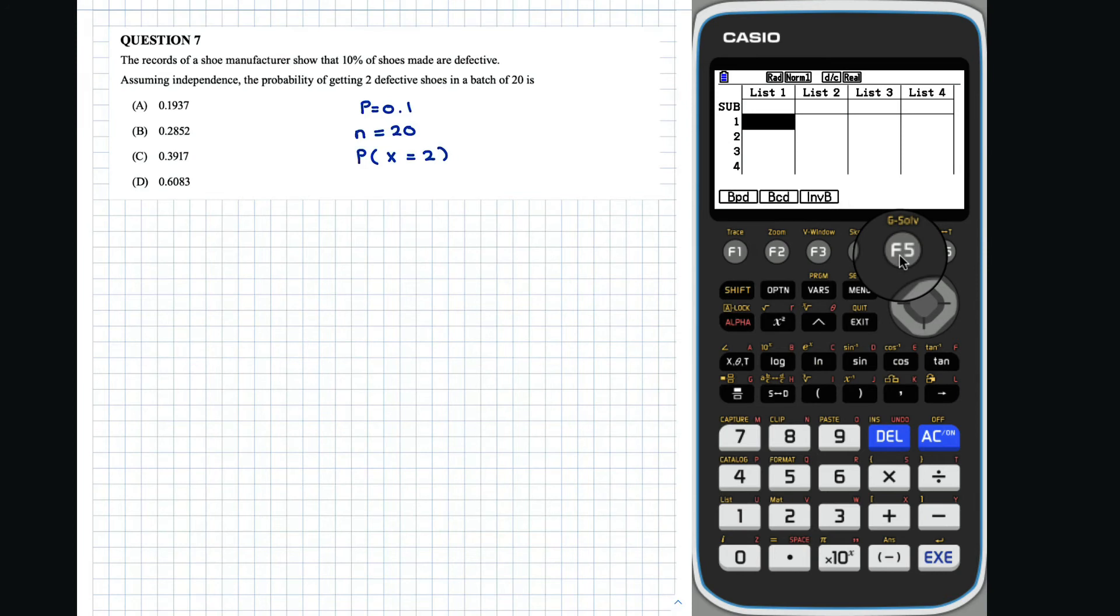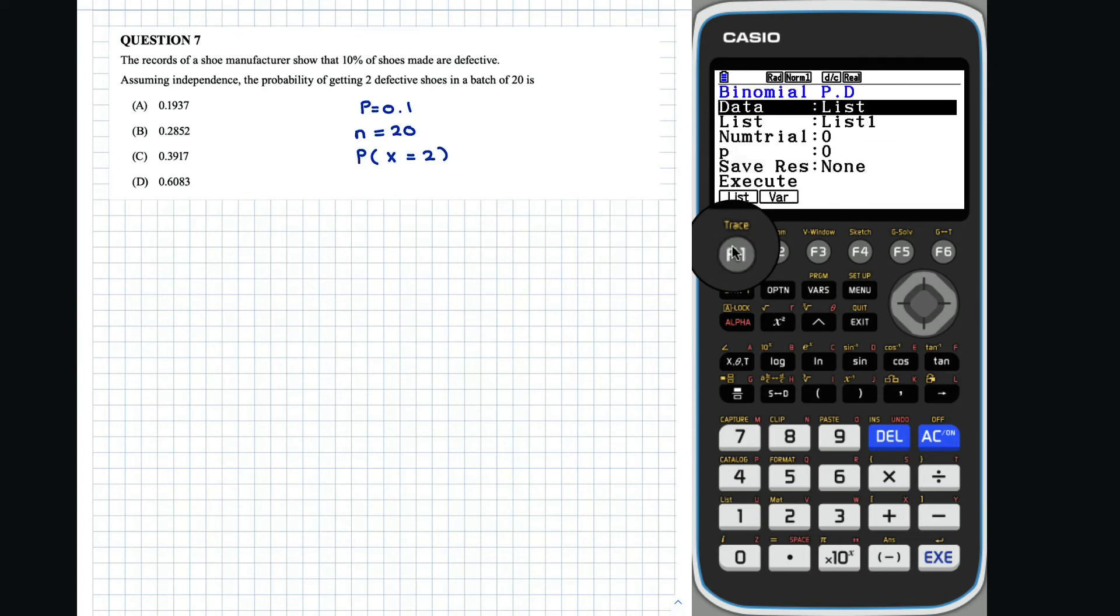We are calculating the probability of a specific point occurring, so we need to use BPD. Entering the values, we get the answer as option B.